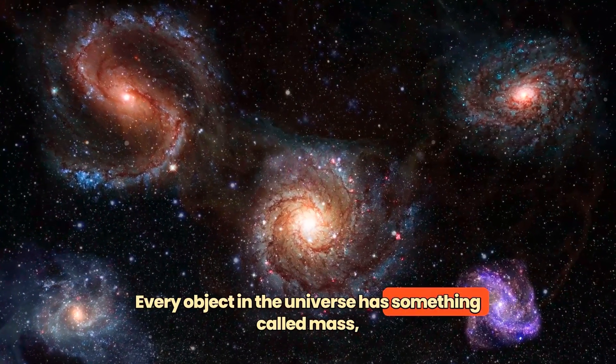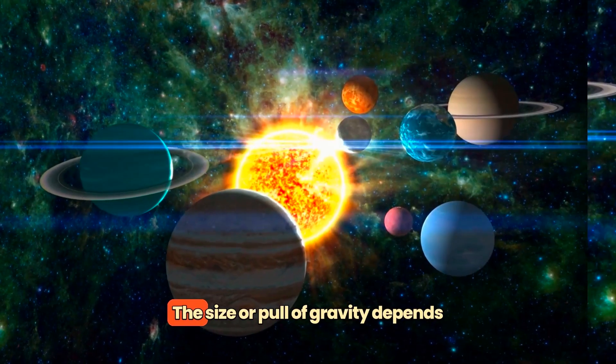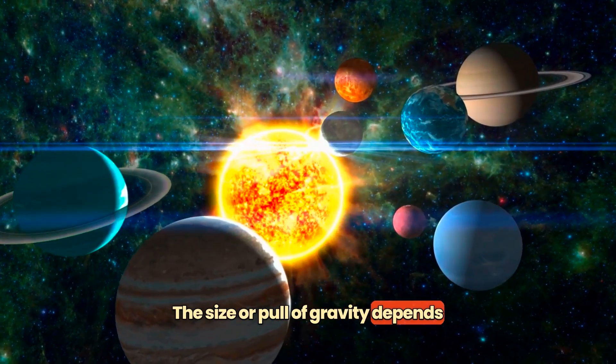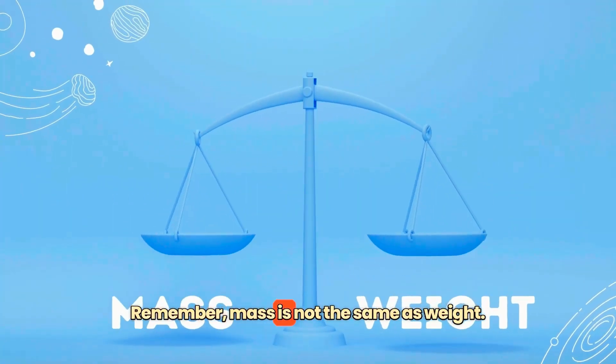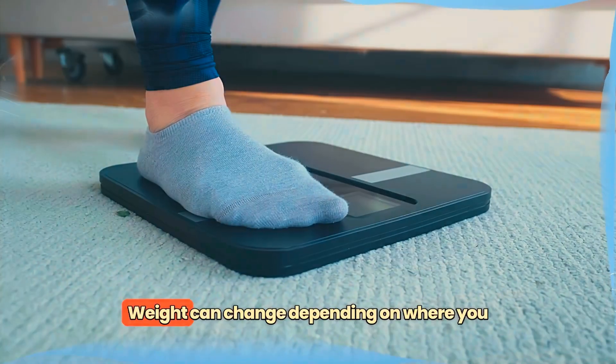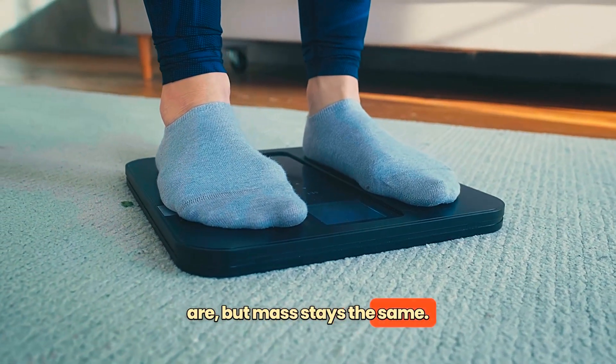Every object in the universe has something called mass, which is the amount of matter in an object. The size or pull of gravity depends on the mass of the object. Remember, mass is not the same as weight. Weight can change depending on where you are, but mass stays the same.